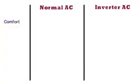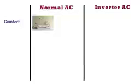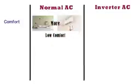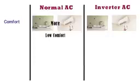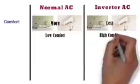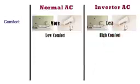Comfort: In case of normal AC, the difference between indoor temperature and set temperature is more, hence the comfort level is low. Whereas in case of inverter AC, the difference between indoor temperature and set temperature is very less, hence the comfort level is high.